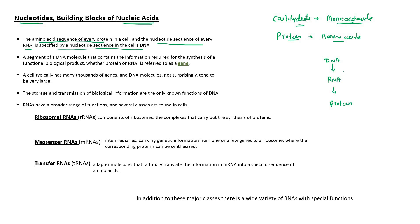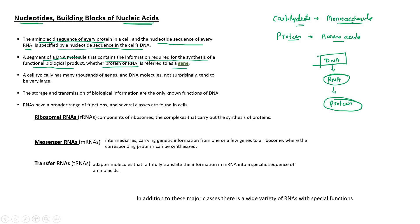Whether it is the RNA nucleotide sequence or the protein amino acid sequence, it is all specified by the DNA nucleotide sequence. The information required for the synthesis of a functional biological product — whether protein or RNA — is called a gene. A gene is a segment of DNA that encodes a functional biological product, whether protein or RNA.